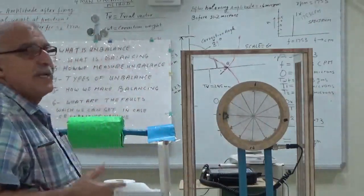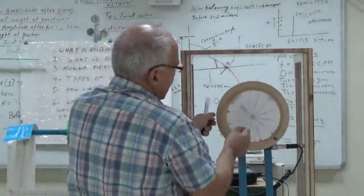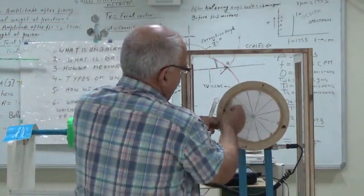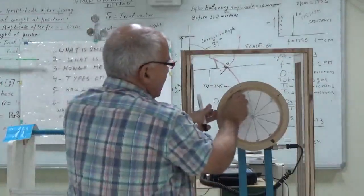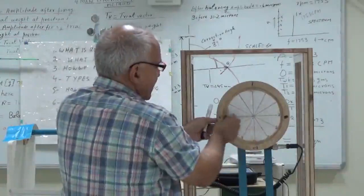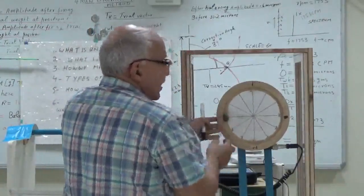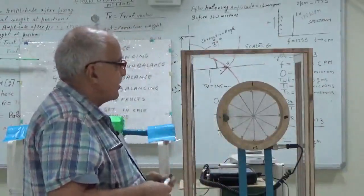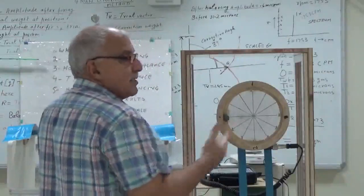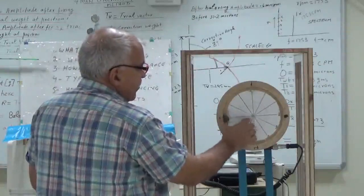For balancing, I need some amount of weight. If I put a small weight it is coming down, so I put more weight. It means I should know the amount of weight, and this weight should be put opposite to the heavy side. I also need the correction angle — which means it should be opposite to the heavy side — and I should also take into account the distance of the mass from the rotating center.